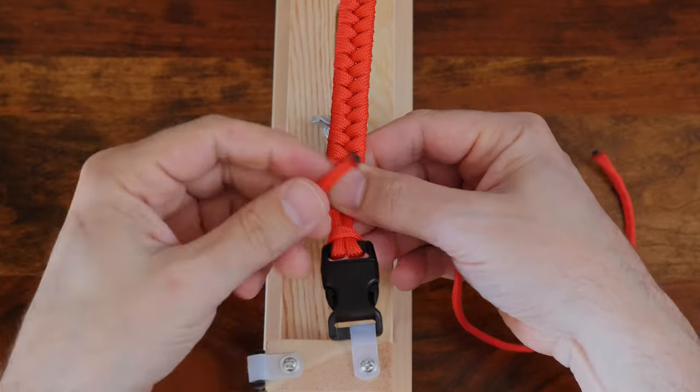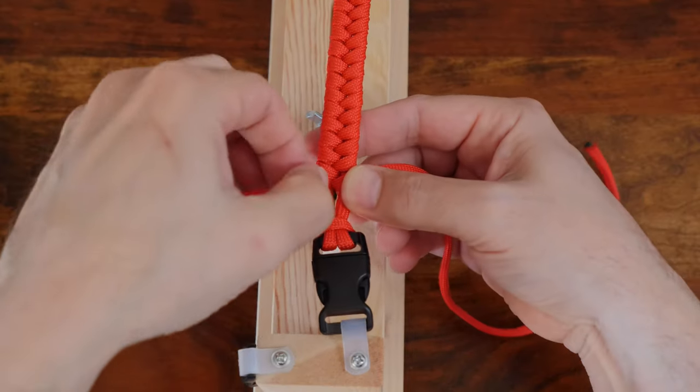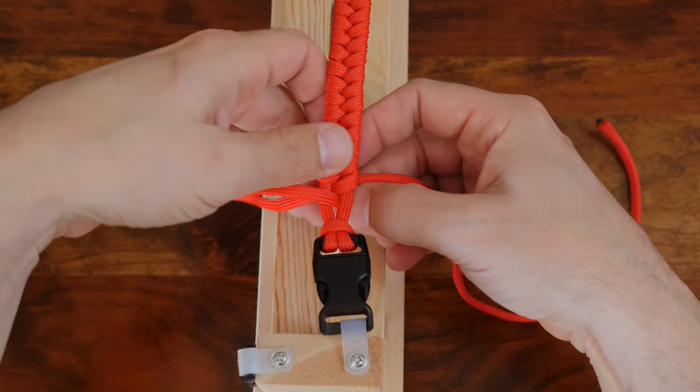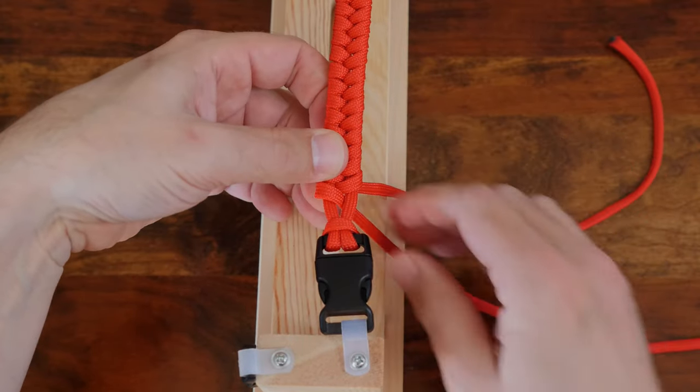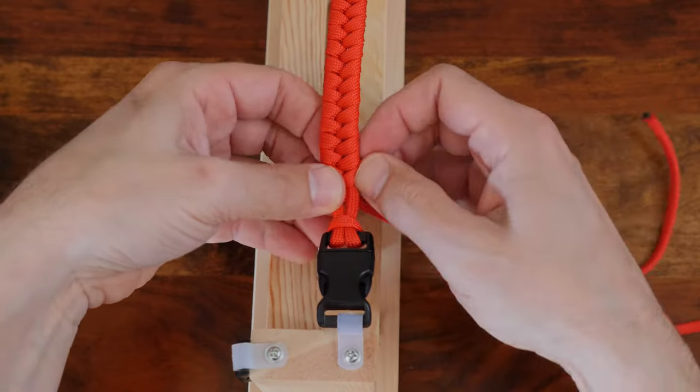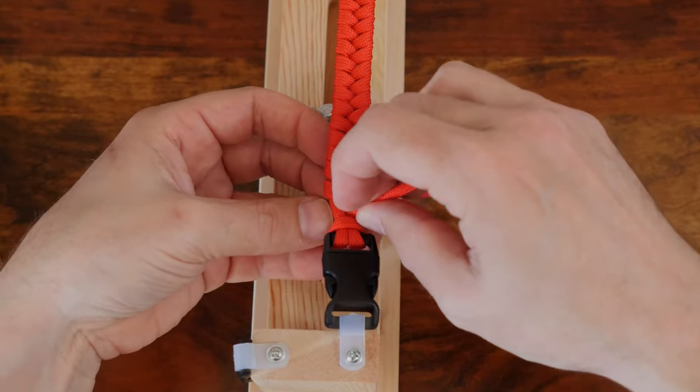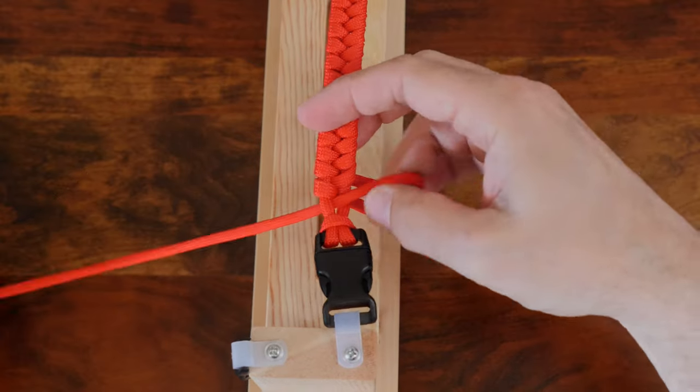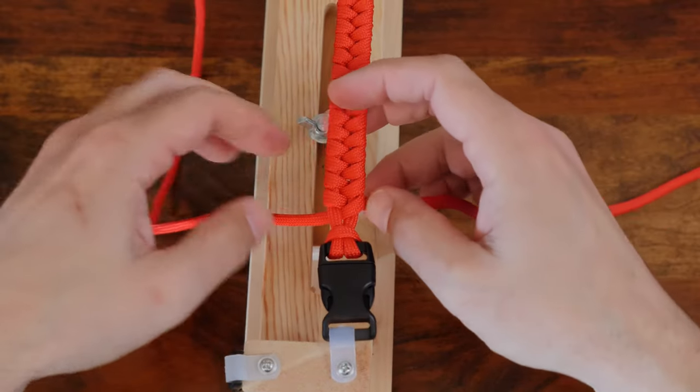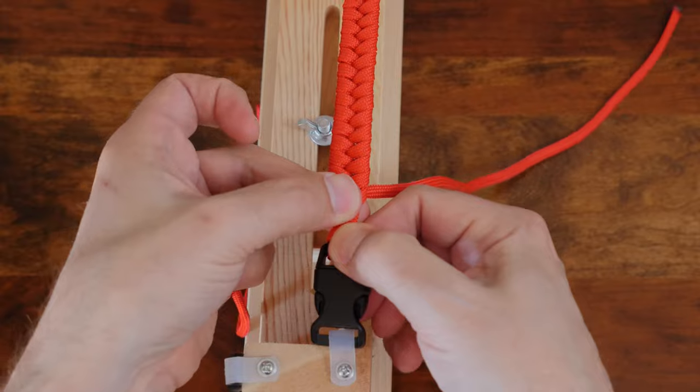Once we reach near the end, it starts to get a little bit tight. It's easy if we change the way we weave by threading the end. At this stage we can also push our last couple weaves up along the core strands to provide a little bit more space.